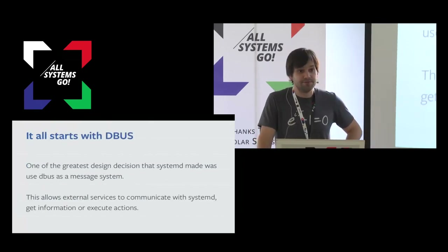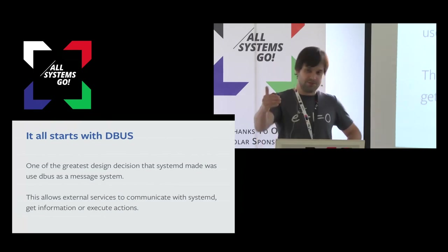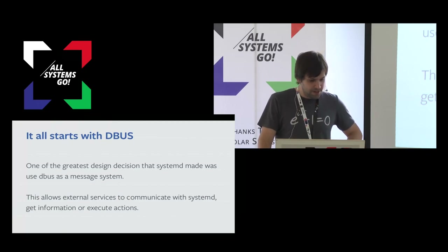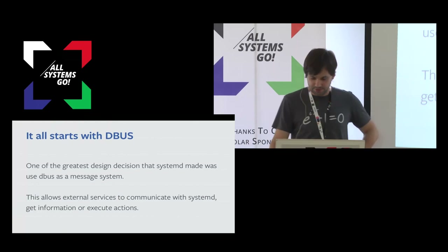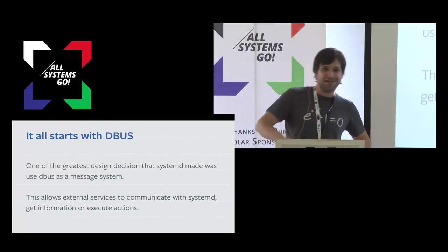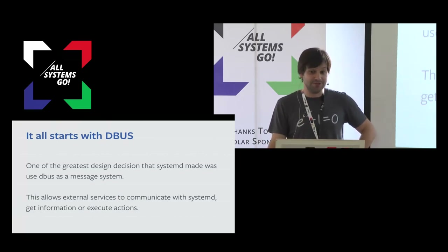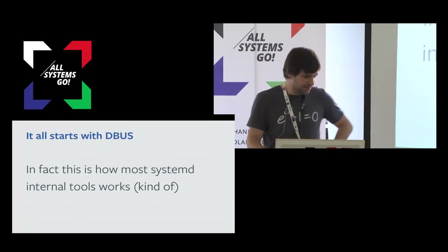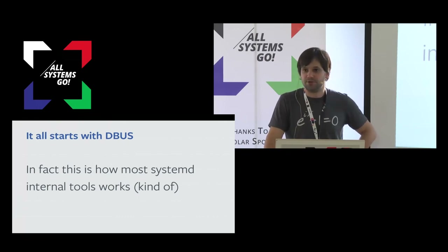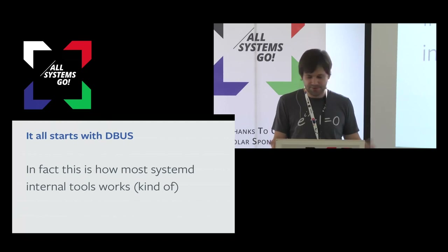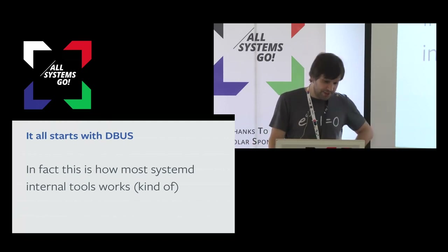It all starts with D-Bus. From an external developer's perspective — not a SystemD developer — this is for me the best decision that could have ever gone into SystemD: using D-Bus as a way to interface with SystemD. This basically allows external services to communicate through this daemon and get all the information you need, in a way that is not as hacky as executing a command, getting text out, parsing the text, and if that text is supposed to be a PID, converting it into an integer.